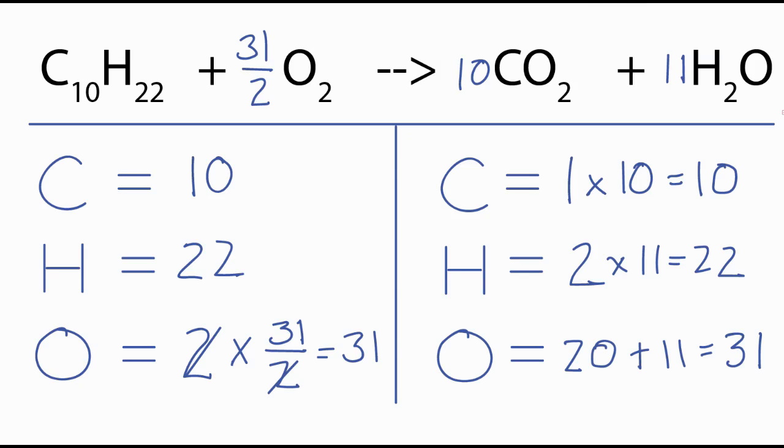Often you're asked to have whole numbers in your balanced equation. To do that, multiply everything by 2. So we'll put a 2 in front of this decane molecule. 2 times 31 over 2. Well, the 2s will cancel out and leave us with 31. 2 times 10, that's 20. And then 2 times 11 is 22.